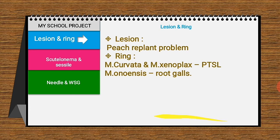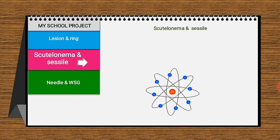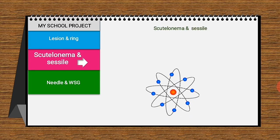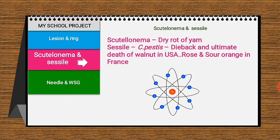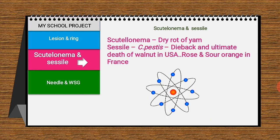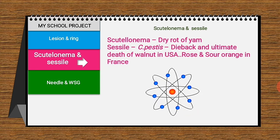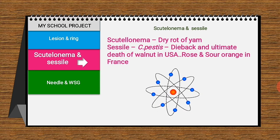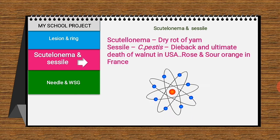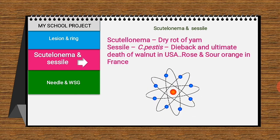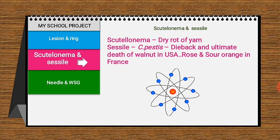Mesocriconema ornanese causes galling on plant roots. Scutellonema causes dry rot of young tubers. Xiphinema (dagger nematode) causes dieback and ultimate death of walnut in the USA, but in France it affects rose and sour orange.